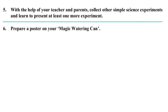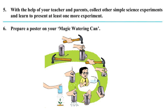Question number five: with the help of your teacher and parents, collect other simple science experiments and learn to present at least one more experiment in your class. Question number six: prepare a poster on your magic watering can. You will make the poster in your notebook using your imagination — you can show a girl or boy using the can or a bottle. This is how the magic watering can activity will be complete.